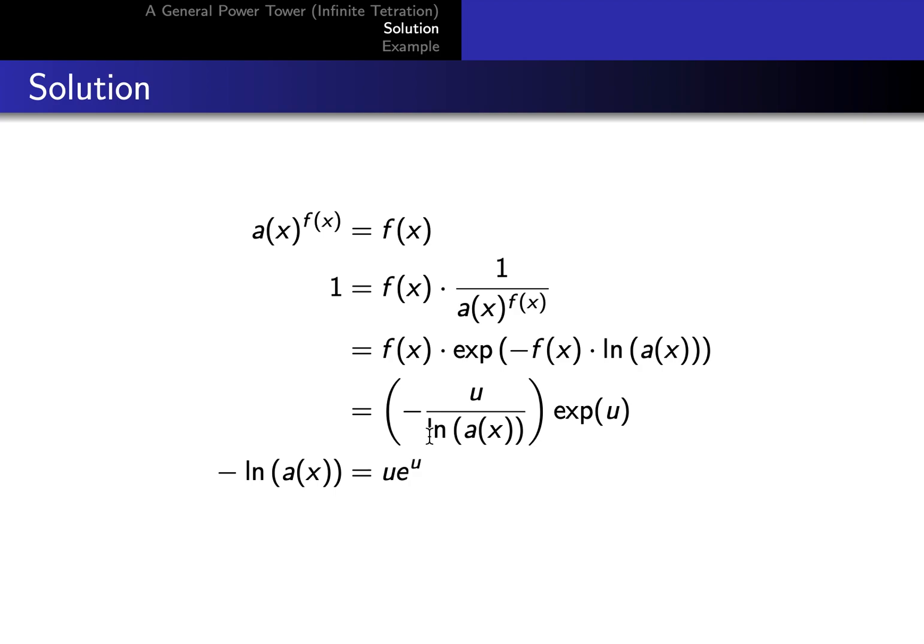And then we multiply both sides through by minus log of a of x, and we're left with this. That's what we're trying to get.